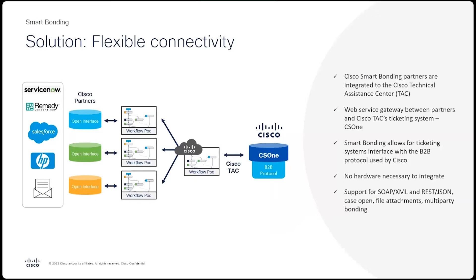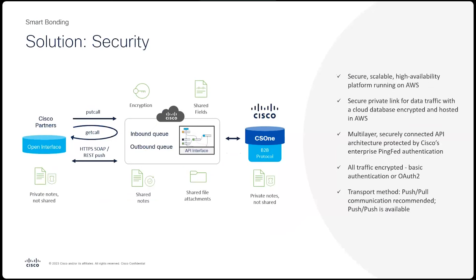Regarding authentication, even though we support basic authentication, if you can use OAuth 2 it will be quicker because you'll be able to do it with less Cisco intervention and move at your own pace. For the transport method, we recommend push and pull, but if that's not possible, push and push will work. Basically, if you can follow the recommended options, you'll be able to self-onboard with very little need for Cisco involvement.